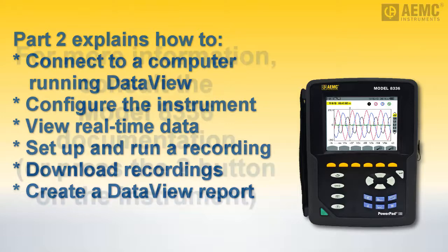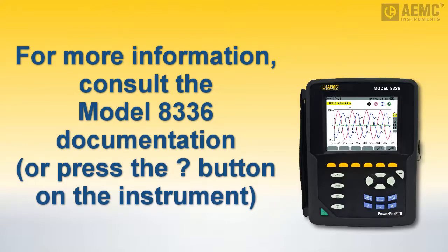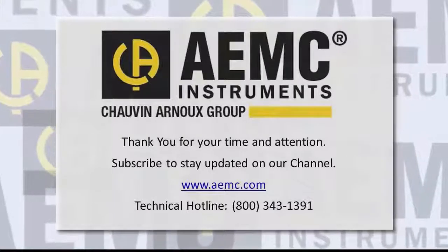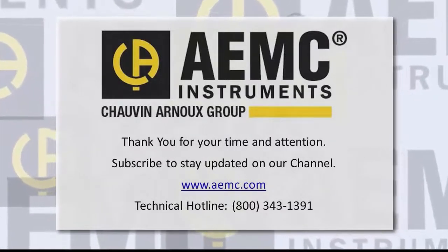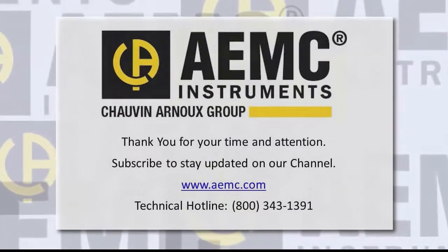Bear in mind, we have only touched upon a few basic functions of the Model 8336 to introduce you to the instrument and get you up and running quickly. Many other features are available, including selecting viewing modes, setting alarms, taking data snapshots, and choosing from a variety of display options. These and all other Model 8336 features are discussed in detail in the user manual that comes with the product. You can also receive guidance directly from the instrument by pressing the Help button. And be sure to check our YouTube channel for instructional videos on other topics in electronics, including the many products offered by AEMC.